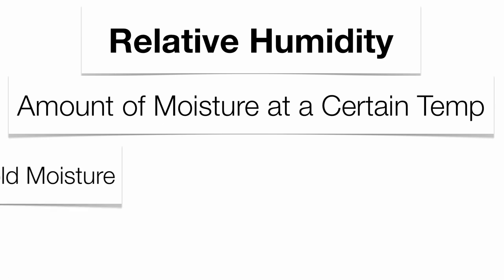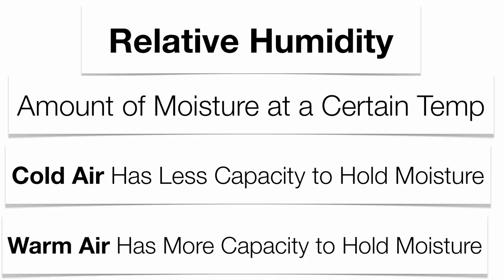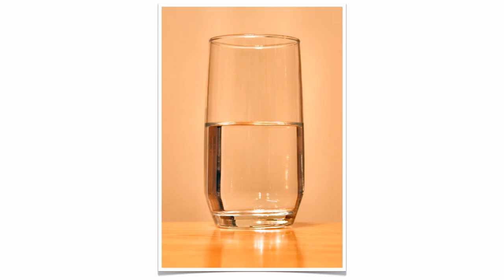Relative humidity is the amount of moisture that the air is holding at a specific temperature. Cold air has a very different capacity to hold moisture than warm air does. Humidity is always expressed as a percentage. Think about a glass of water filled up to that percentage — if humidity is 97%, you have a lot of moisture; if it's 27%, you don't have a lot. That analogy gives you an idea of when you have a lot versus very little moisture in the atmosphere.